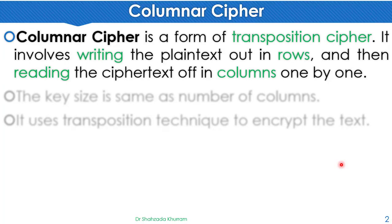Columnar cipher is a form of transposition cipher. It involves writing the plaintext out in rows and then reading the ciphertext off in columns one by one. Columnar cipher is a very simple encryption technique. In this case, when we write, we write in rows.